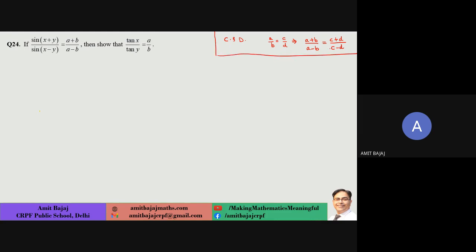You can easily verify this by assuming, say, a = 2 and b = 3, so 2/3 is equivalent to 6/9. Now applying C&D: (2+3)/(2−3) on the left and (a+b)/(a−b) on the right — both expressions come out the same. This is the rule referred to as C and D.